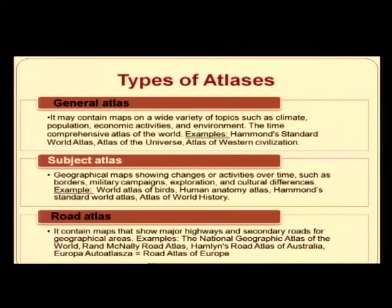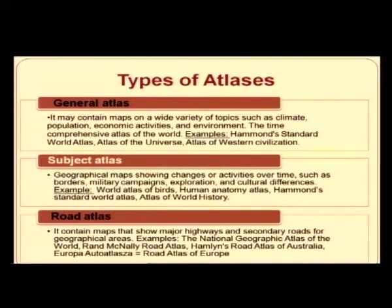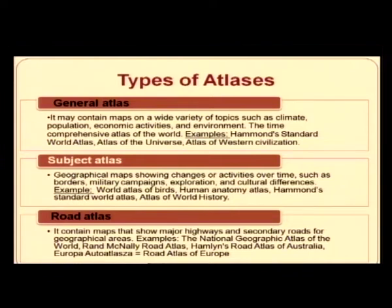A general atlas may contain maps on a variety of topics such as climate, population, economic activities, and environment — for example, the Hammond Standard World Atlas, Atlas of the Universe, and Atlas of Western Civilization. A subject atlas contains geographical maps showing changes or activities over time, such as borders, military campaigns, exploration, and cultural differences — for example, World Atlas of Birds, Human Anatomy Atlas, Hammond Standard World Atlas, and Atlas of World History.